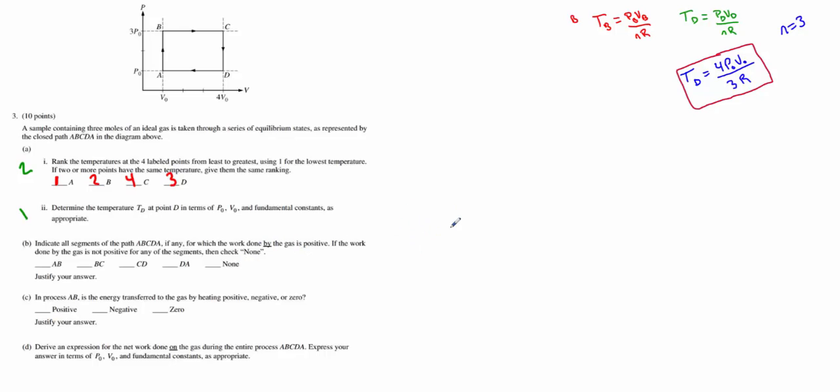And we want to know where the work done by the gas is positive. Remember, work is PΔV, and it really depends on if you want to define it as by the gas or on the gas, if you want to toss in that negative. So I like to think of it as if the volume of the container increases, the gas is doing the work. If the volume is decreasing, then something is doing work on the gas. So let's go through each segment. A to B, there is no volume change, so there is no work done. So that's not going to be right.